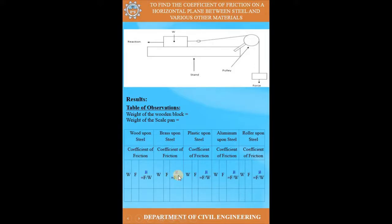The coefficient of friction is directly proportional to the force. A higher force indicates a higher coefficient of friction, while a lower force indicates a lower coefficient of friction.